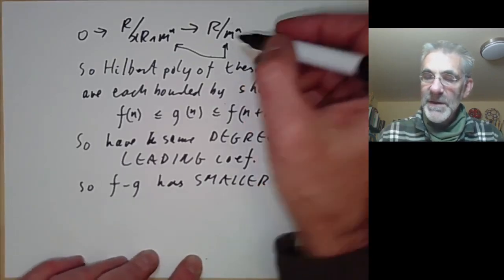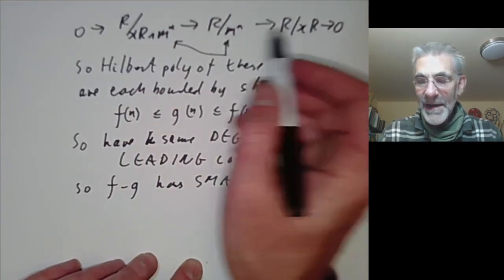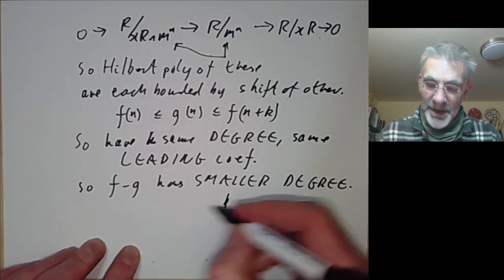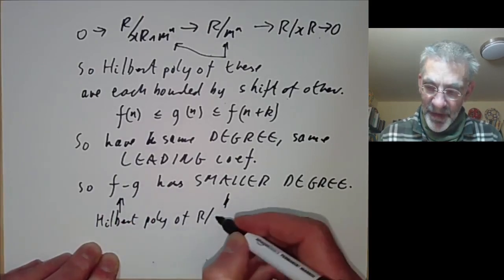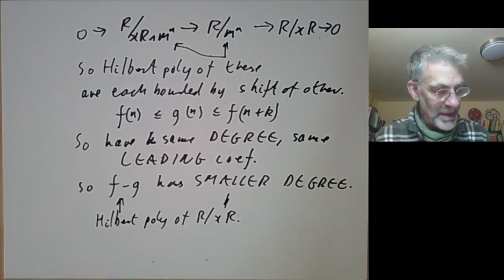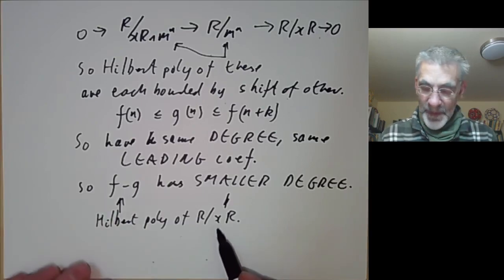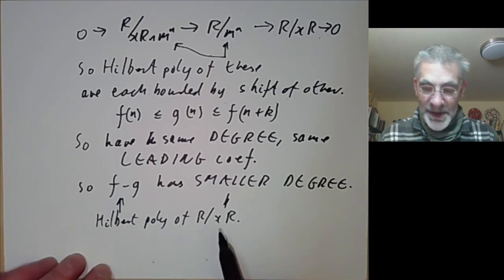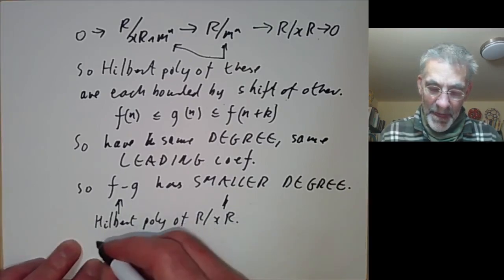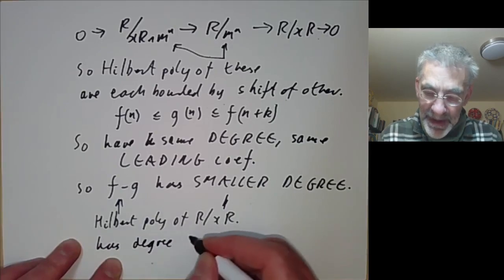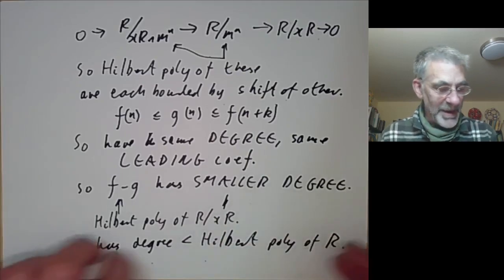Extending the sequence a bit further to get r/xr → 0, and using that the Hilbert polynomial is additive in short exact sequences, we obtain the Hilbert polynomial of r/xr. This proves the lemma: the Hilbert polynomial of r/xr has strictly smaller degree than the Hilbert polynomial of r, which is exactly what the lemma stated.